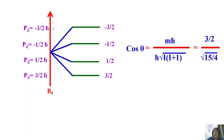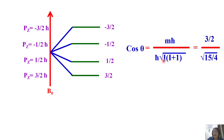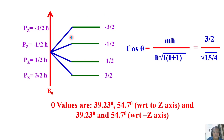For spin-3/2 nuclei there are four possible quantization directions: minus 3/2, minus half, plus half, and plus 3/2. Plugging in m equal to 3/2 and I equal to 3/2 into I(I+1) and computing cosine theta gives theta equal to 39.23 degrees in the direction of the field, and 39.23 degrees in the direction opposite to the field. For the plus-half and minus-half states, the angle remains 54.7 degrees as we worked out before.